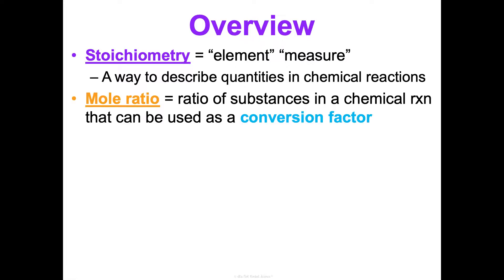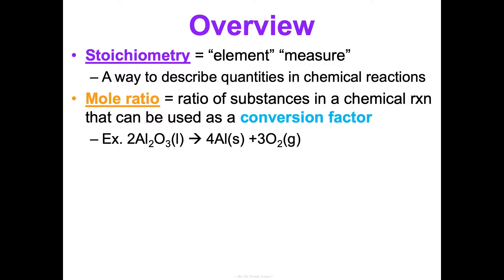So we need to do molar mass, and we need to use mole ratios to do this. A mole ratio — I introduced you to this at the end of Concept 1, but now let's actually really dive into it. It's just a ratio of substances in a chemical reaction that can be used as a conversion factor, which we also talked about in Concept 1.